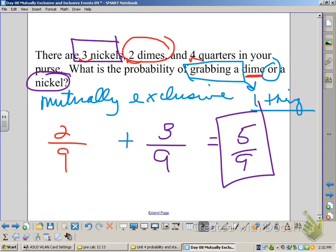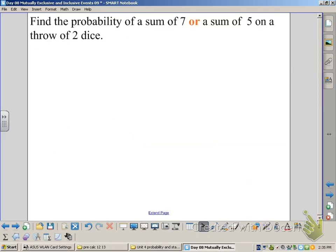Let's take a look at the next example. So in this problem, we're looking at a sum of seven or a sum of five on a throw of dice. You will probably want to be looking at your dice sheet as you work on this. Go ahead and pause here and see if you can calculate the answer. Take about a minute or two and then resume.